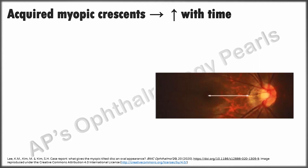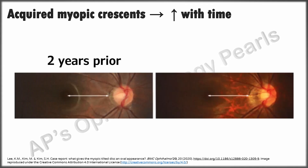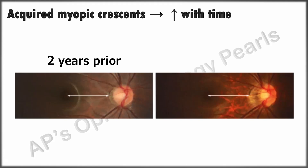The most important feature of acquired myopic crescents is that they increase with time, whereas the crescents of tilted discs are stationary. The picture here shows the disc of a 10-year-old, and two years previously this was the appearance of her disc. The authors who reported this case believe that the disc doesn't really get tilted in myopia, but there is a nasal shifting of the temporal disc border that gives the appearance of a tilt. Regardless of the reason, a myopic disc can mimic a tilted disc, and the only factor that can conclusively differentiate the two is the progression of the myopic crescent with time.